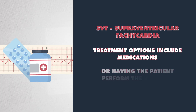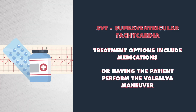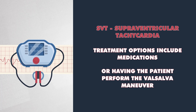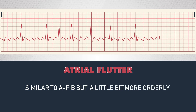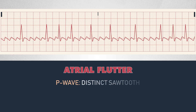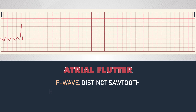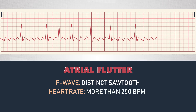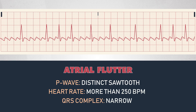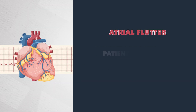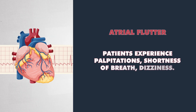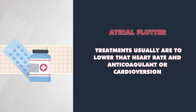Treatment options for SVT include medications or having the patient perform the Valsalva maneuver in order to lower the heart rate until medical interventions such as cardioversion can be applied. Atrial flutter is similar to AFib; however, the example is a little more orderly. Atrial flutter has a distinct sawtooth wave seen in the place of the P wave. The heart rate can be more than 250 beats per minute. The QRS is narrow, and it may require further tests because it's hard to differentiate from SVT. These patients experience palpitations, shortness of breath, and dizziness. Treatments are usually to lower the heart rate, anticoagulants, or cardioversion.